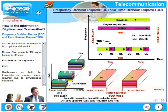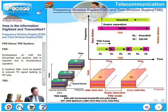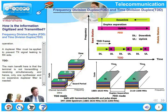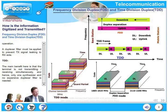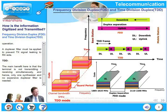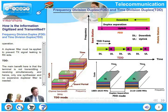So how do we compare FDD and TDD? In FDD, synthesizers on both the transmitter and receiver side are required due to simultaneous operation, and a duplex filter must be applied to prevent the TX signal leaking into the RX side. In TDD on the other hand, the main benefit is that the terminal is not transmitting and receiving simultaneously, and hence only one synthesizer and no expensive duplex filter is required.